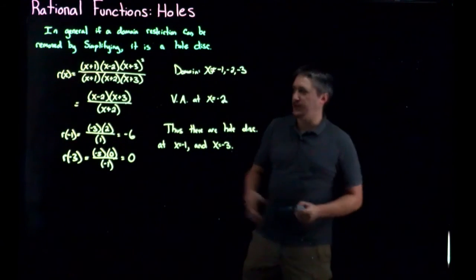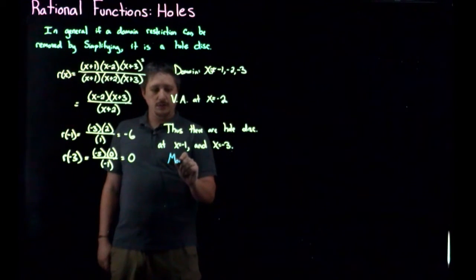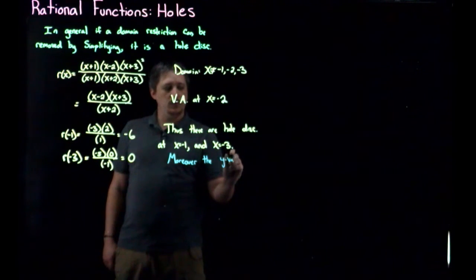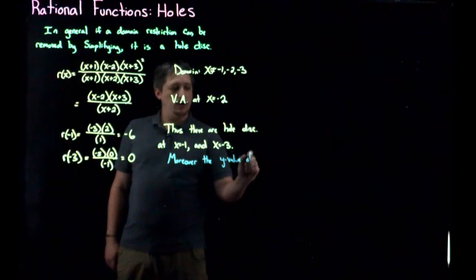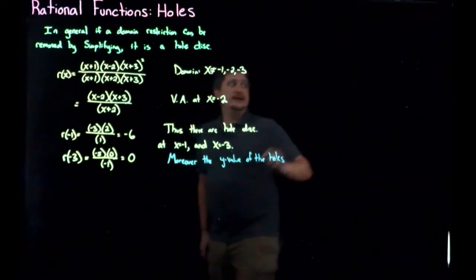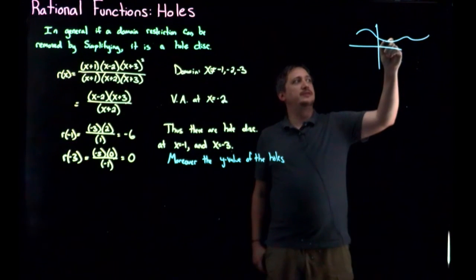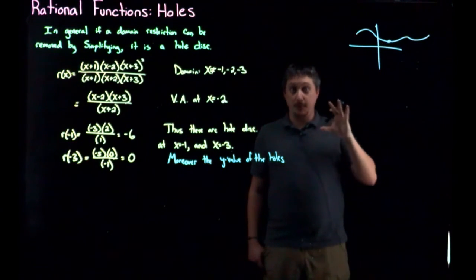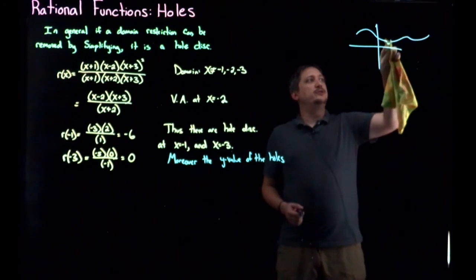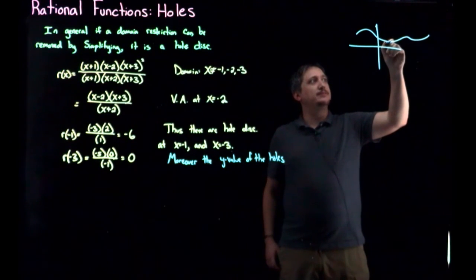there are hole discontinuities at x equals negative one and x equals negative three. And here's why we still plugged it in even though we could sort of just look and know. And it's because moreover, the y value of the holes, because remember what a hole is, right, is if a hole discontinuity occurs if we have some weird function graph and we're missing a particular point, right, a point meaning an xy value.